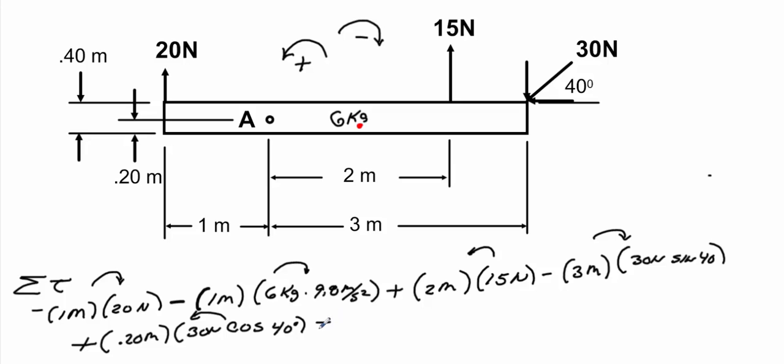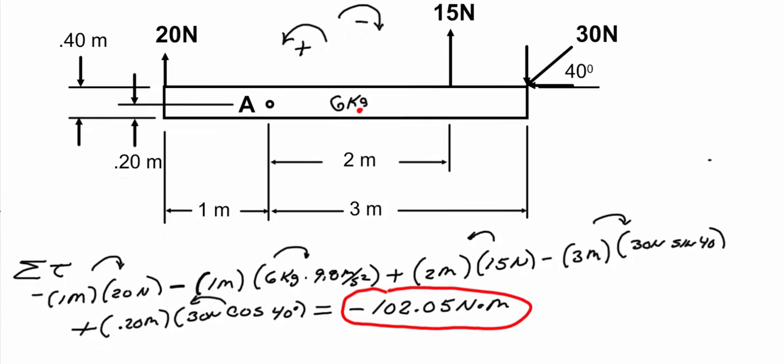If we run those numbers we will get minus 102.05, and the units for torque will be newton meters. It's a fairly simple beam with a few forces on it. I hope this short lecture helps you understand how to set up and calculate torque from any point. As always I wish you guys the best of luck.